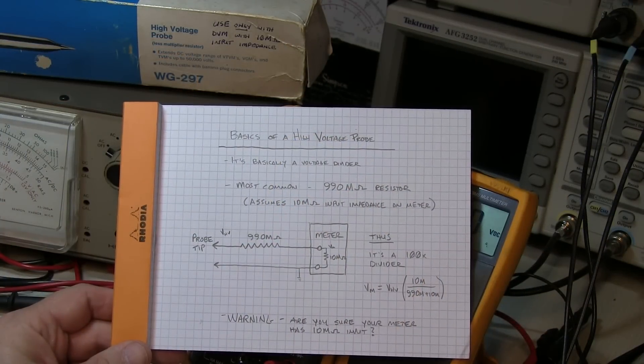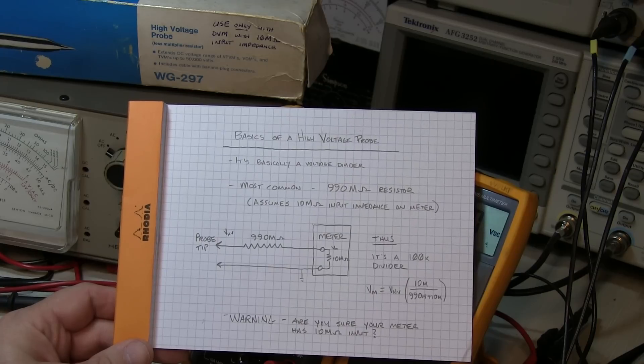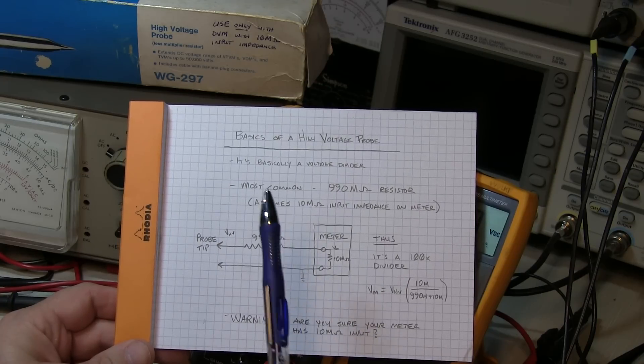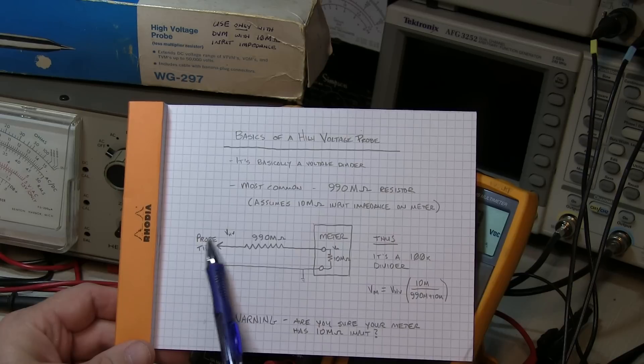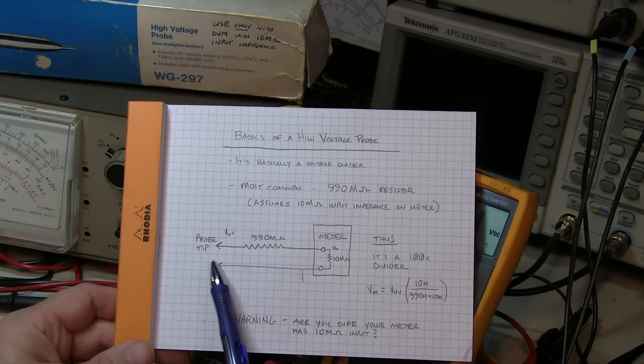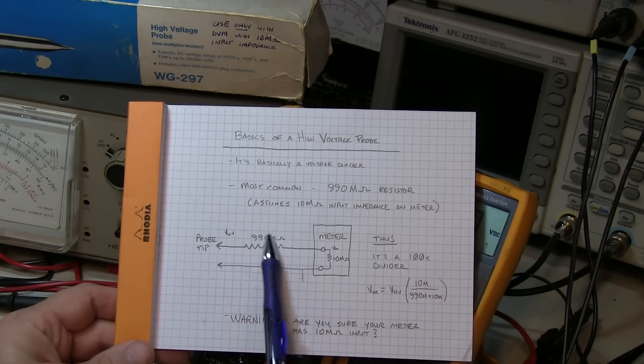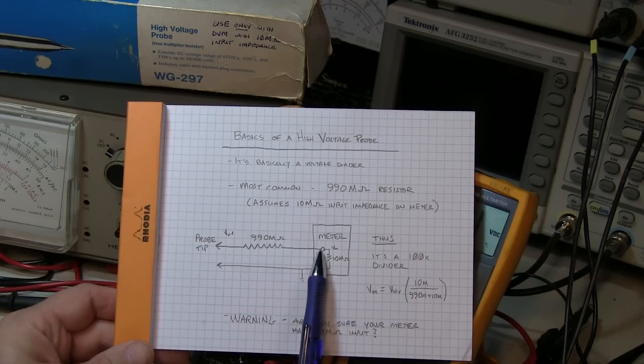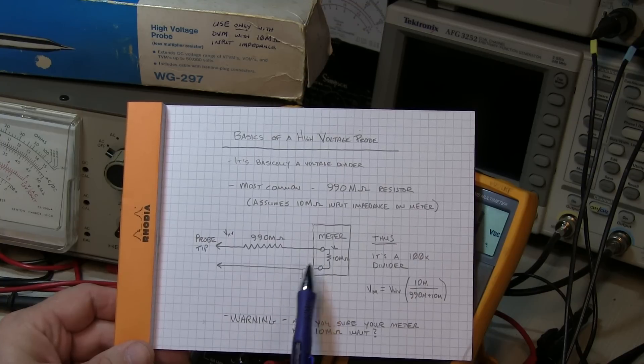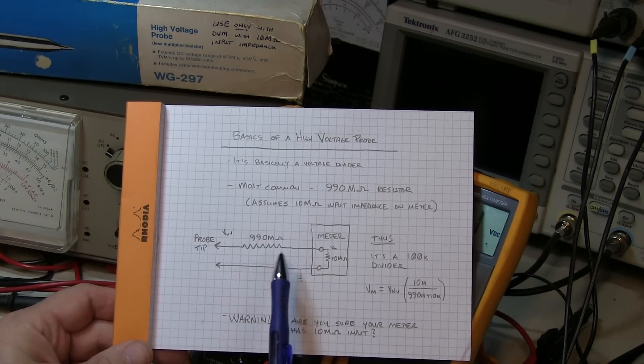A high voltage probe is really nothing more than a voltage divider, where you've got the probe tip here connecting up to your high voltage and then ground, and it has a series resistor that is used in conjunction with the impedance of the meter to create a voltage divider.